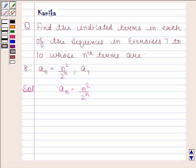Since we need to find a7, therefore we will put n as 7 in the nth term. By substituting n as 7 in the nth term, we get a7 is equal to 7 squared upon 2 to the power 7.